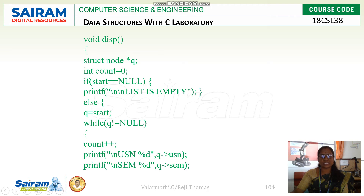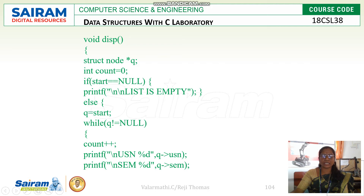Then, the void display function — display is used to show the elements in the singly linked list. We should check whether the list is empty or not. If start equals null, then we display that the list is empty. Otherwise, we connect the start node to Q by assigning start to Q, and display all elements until Q reaches null. The condition is: while Q is not equal to null, continue.